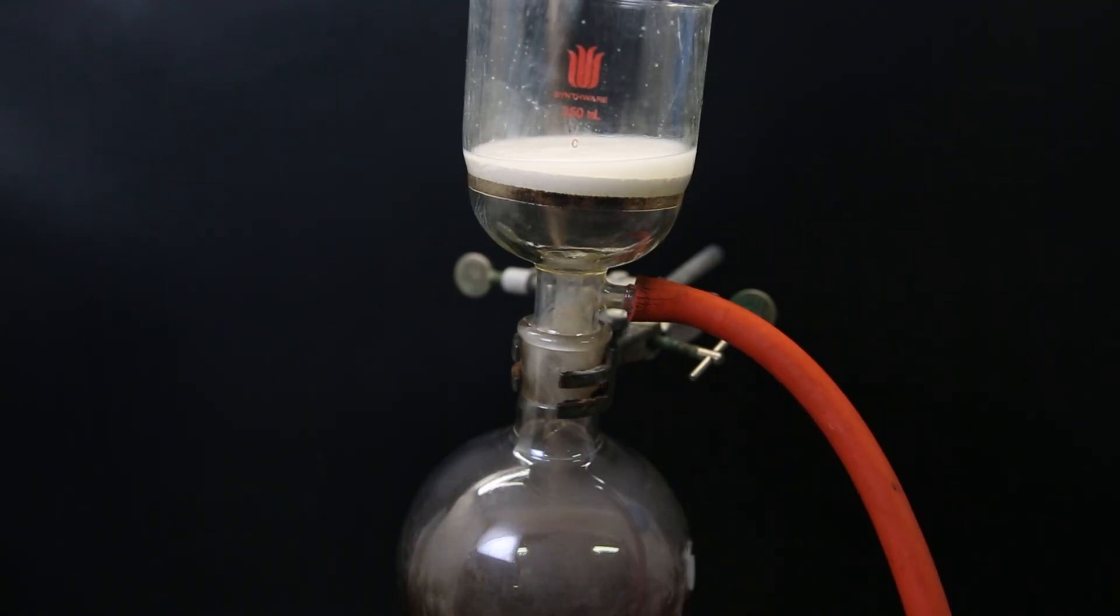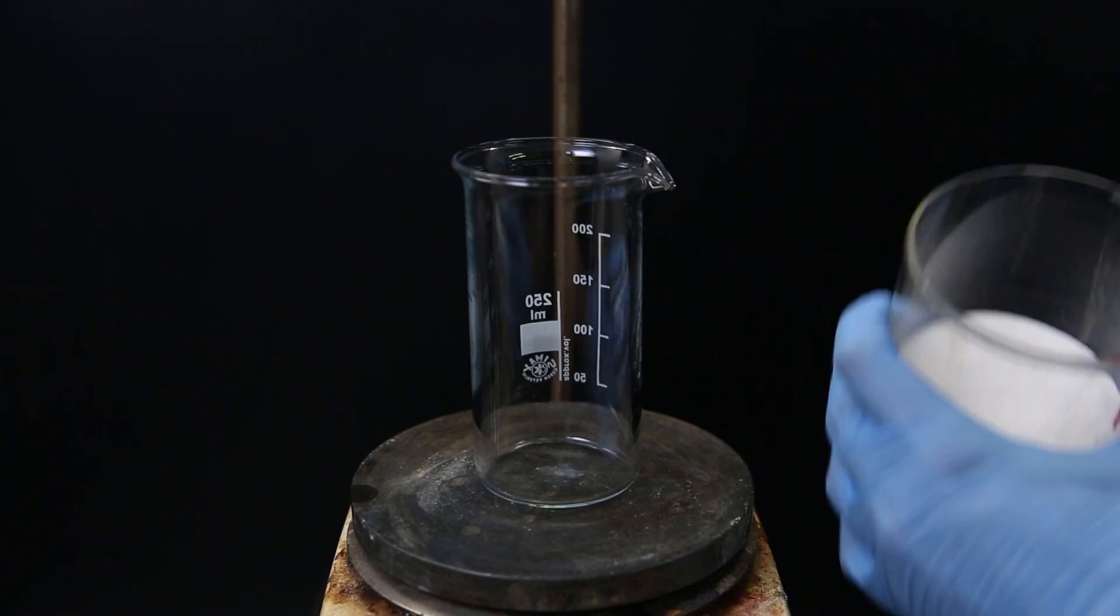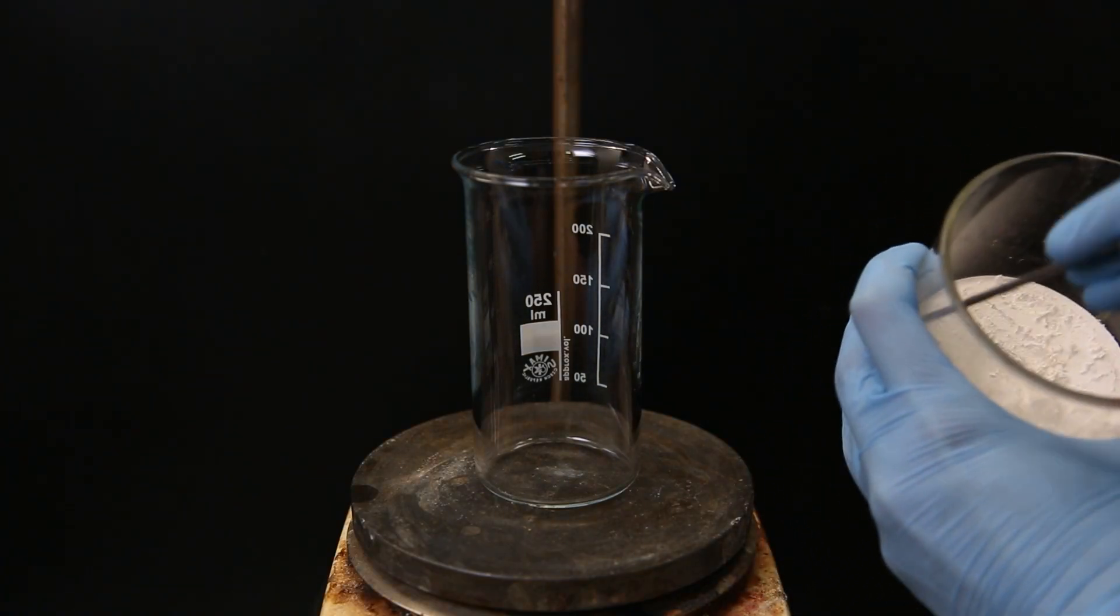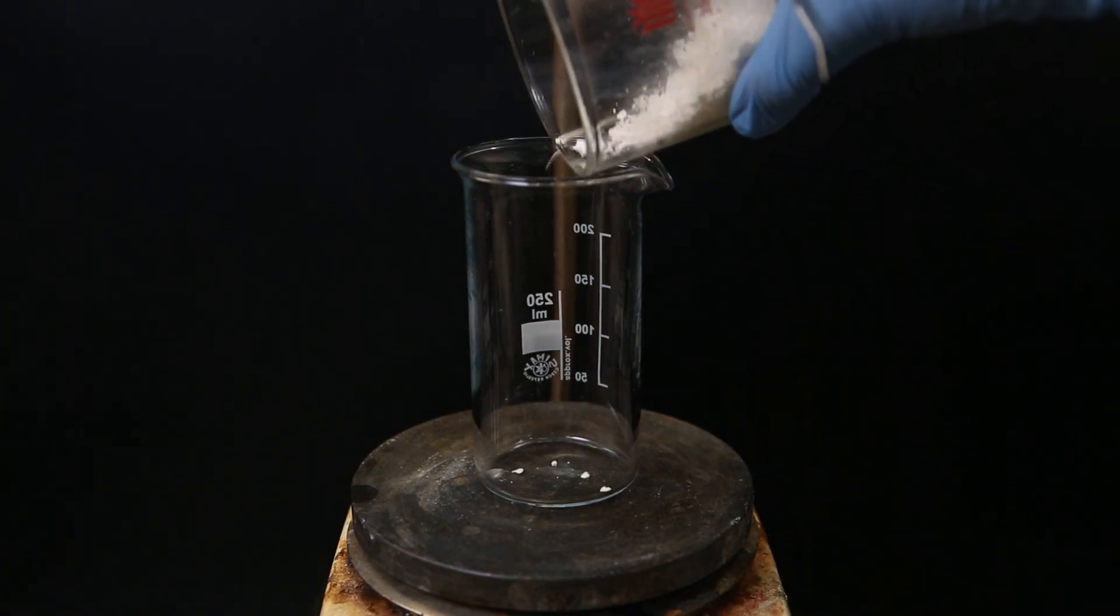So I set it up for vacuum filtration, leaving behind a white solid that I wash with more DCM. The liquid filtrate still contains product, from which I can recover most. But first I take the product and move it into a beaker, giving the first bit of relatively pure product.